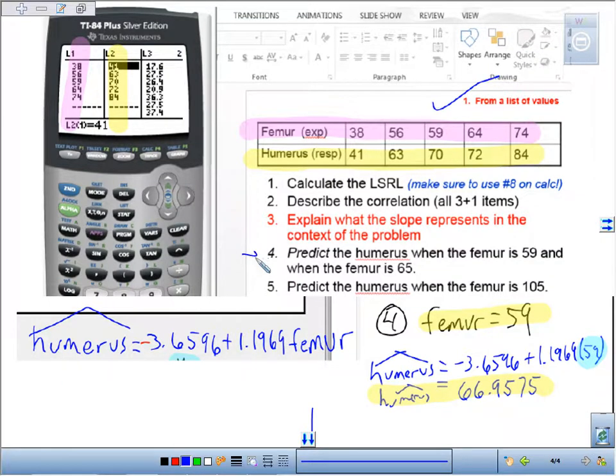For step four, we predicted the humerus when the femur was 59. We plugged 59 in here and got a predicted humerus length of 66.9575. Now, if I want to find the residual at femur equals 59, it'll be the actual minus the predicted.